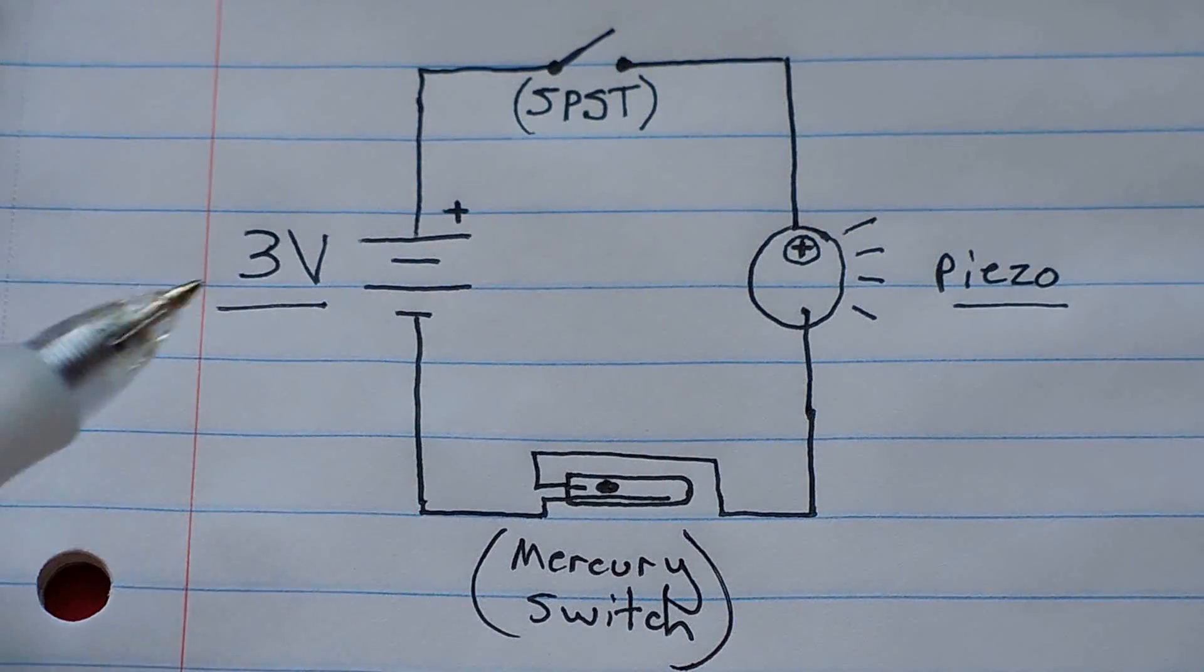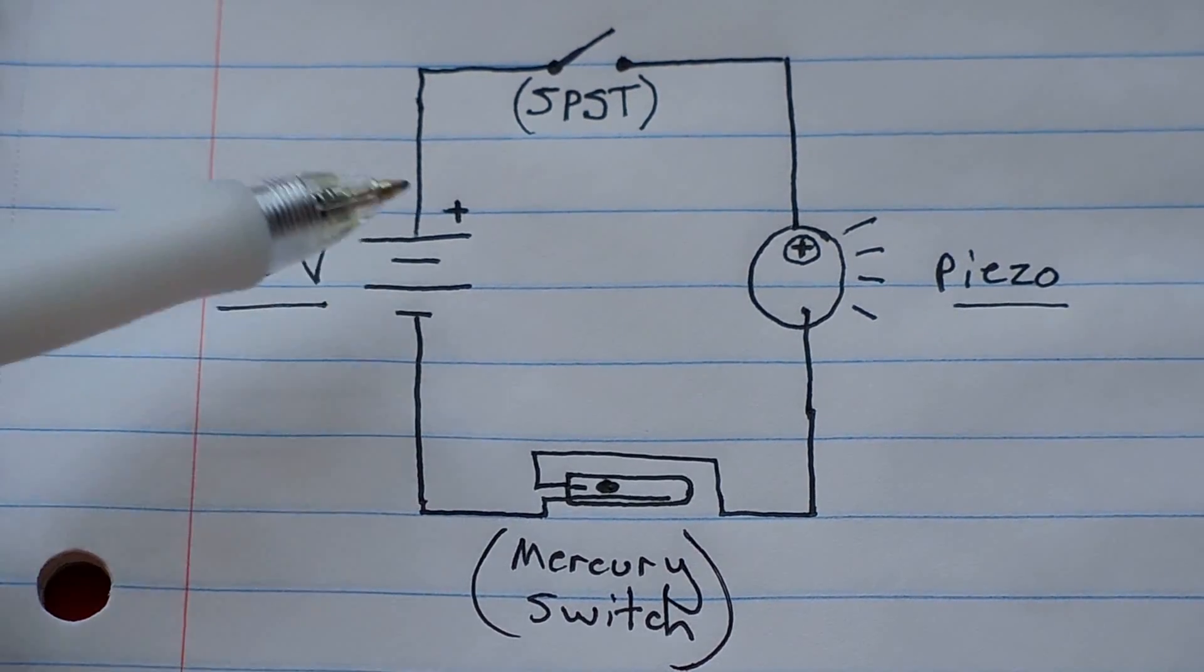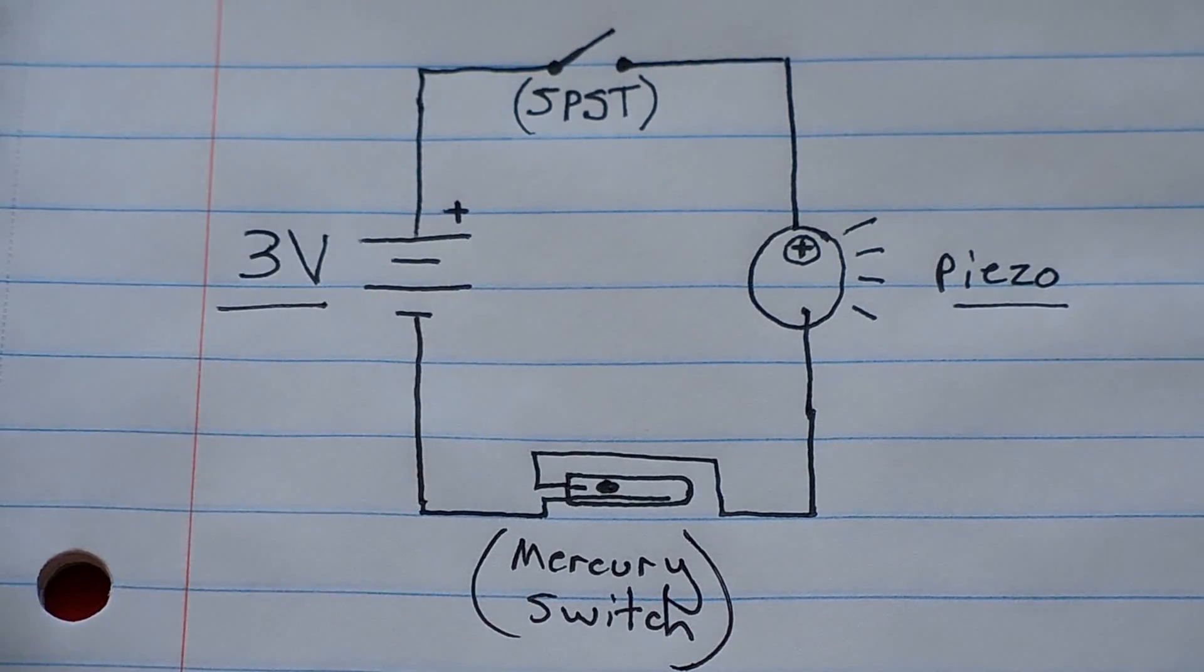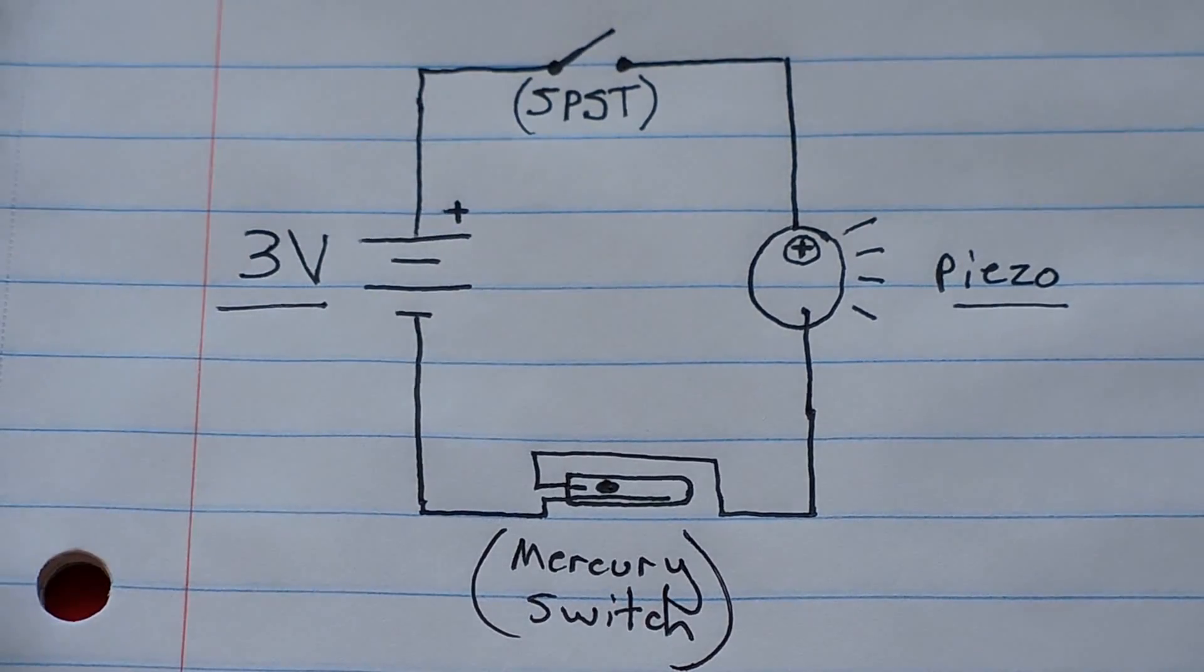Okay, the schematic is very simple. Right here is your three volt coin cell holder. There's the positive. It goes up and over to your switch. Now you only need a single pole single throw mini.